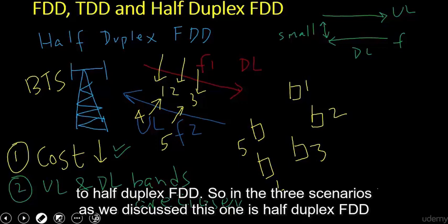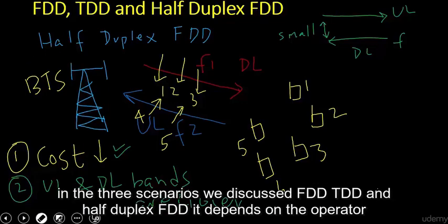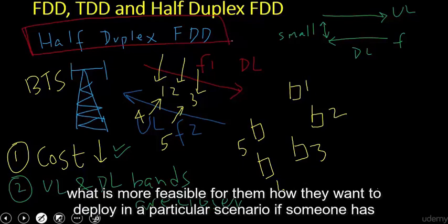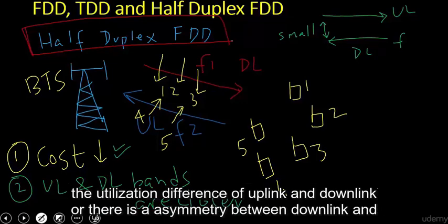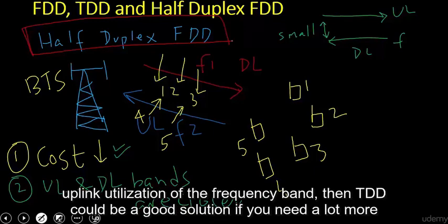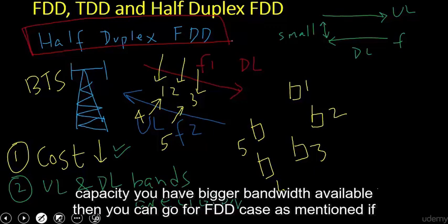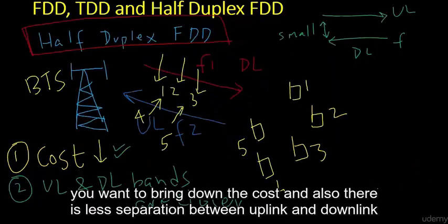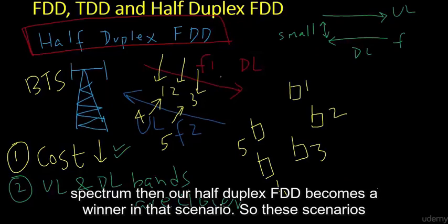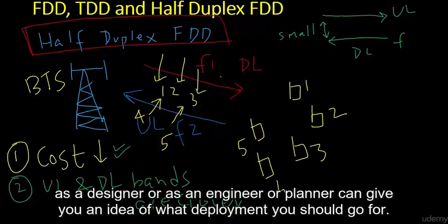To summarize, we discussed FDD, TDD, and Half Duplex FDD. The choice depends on the operator's scenario: if they have an unpaired spectrum with asymmetric uplink/downlink utilization, TDD is a good solution. If they need more capacity with larger bandwidth, FDD is preferred. If they want to bring down device cost and there is a small separation between uplink and downlink spectrum, then Half Duplex FDD is the best option.